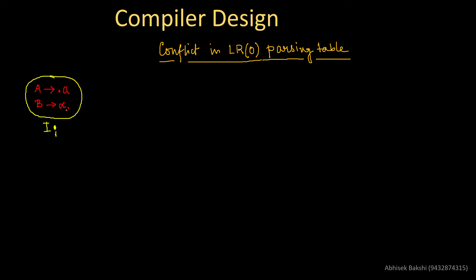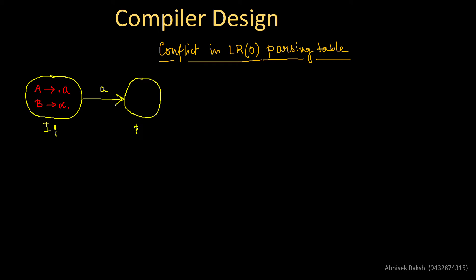B → α. is the final item, meaning everything is seen and there is nothing left to process in that production. Now, from state i_i, because of the small 'a' present in A → .a, we can have a transition on small 'a' to a new state i_j, which will contain the item A → a. (dot after small a).